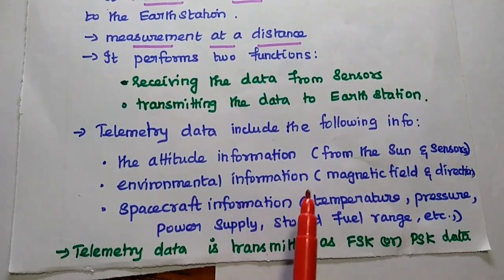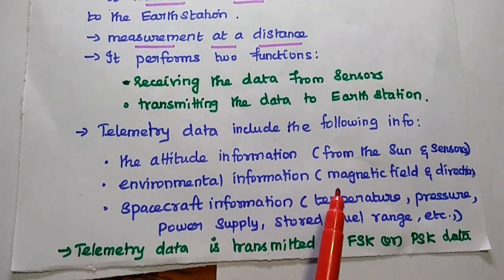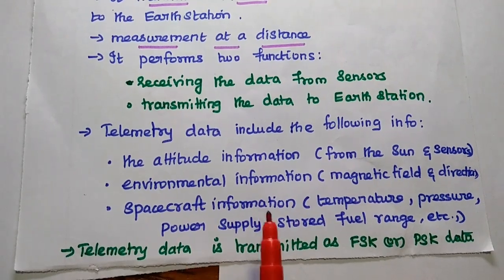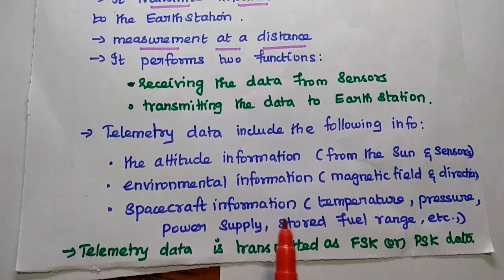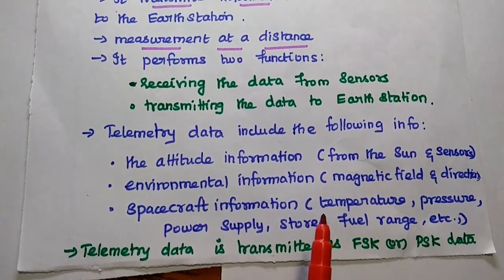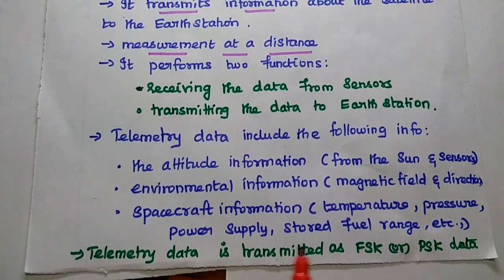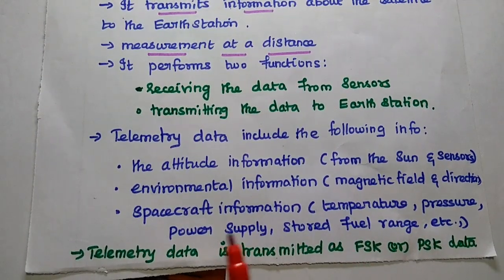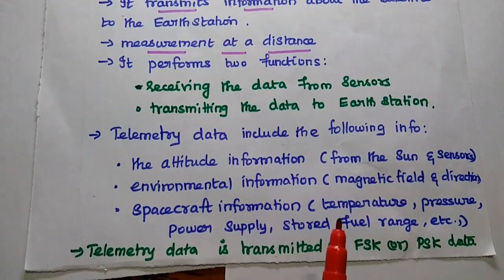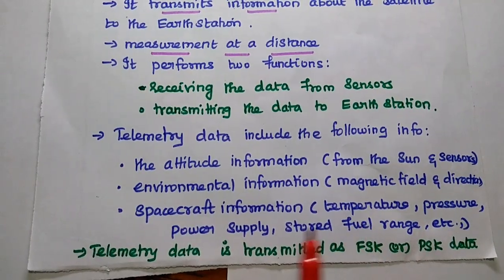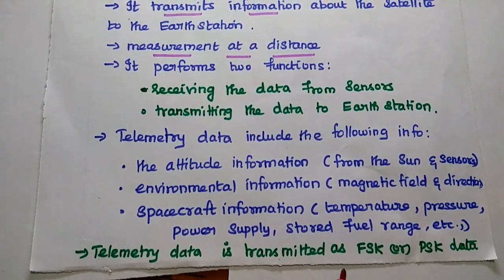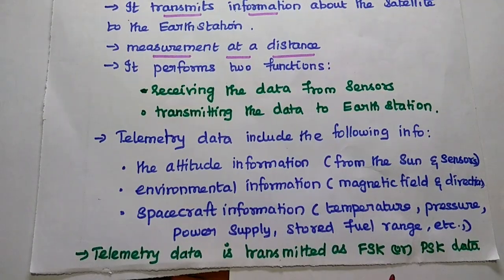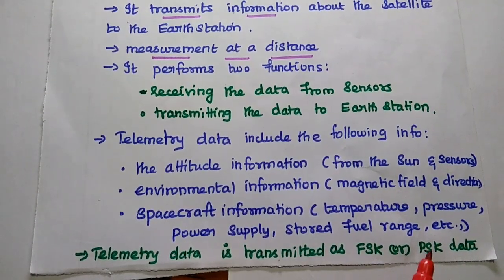Telemetry data also includes environmental information such as the magnetic field intensity and the direction of the satellite, as well as spacecraft information like temperature, pressure, power supply, and storage fuel range. All of this spacecraft information is gathered from the sensors. The telemetry data is transmitted as a frequency shift keyed (FSK) signal or phase shift keyed (PSK) signal.